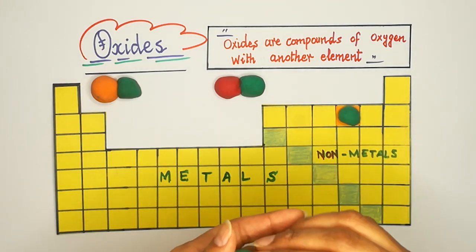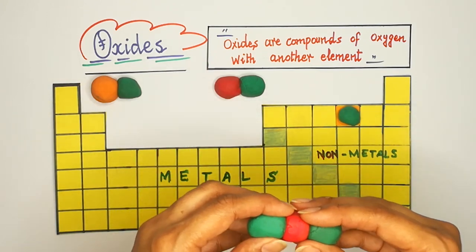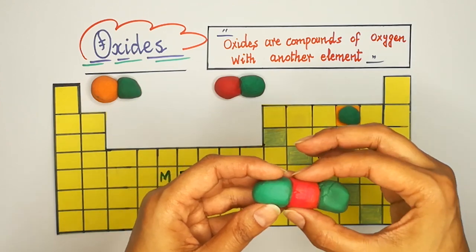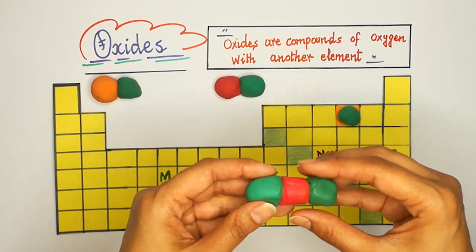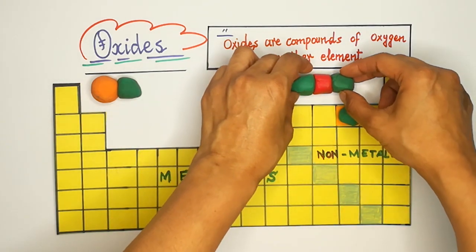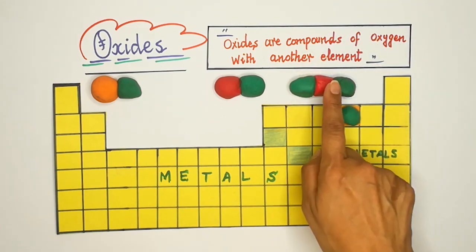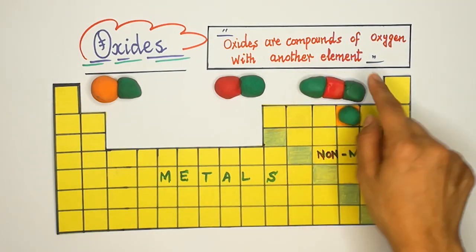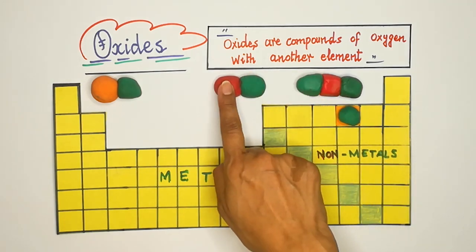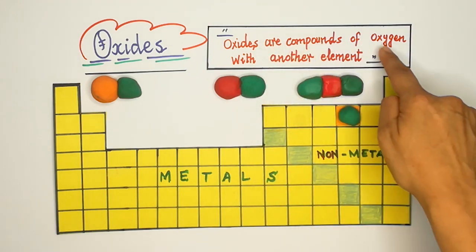If two oxygen atoms combine with one carbon atom, we call it carbon dioxide. So carbon dioxide is formed when one carbon and two oxygen atoms combine. One carbon with one oxygen gives carbon monoxide. Oxides are compounds of oxygen with another element — those elements can be metals or non-metals.